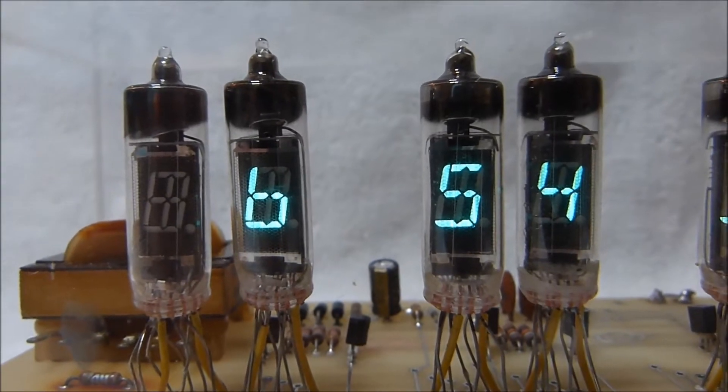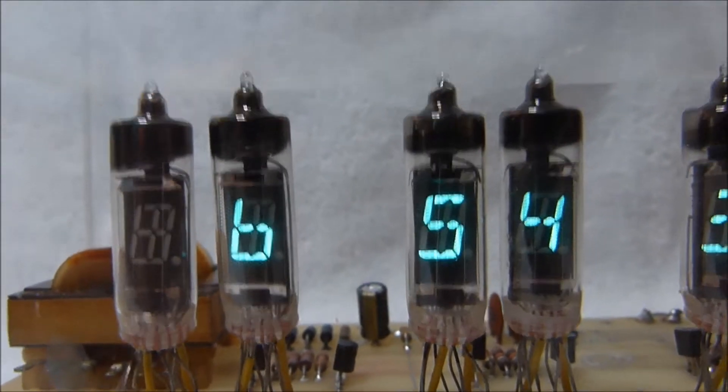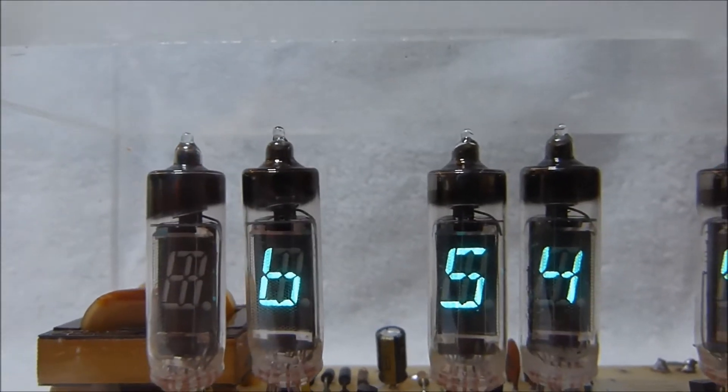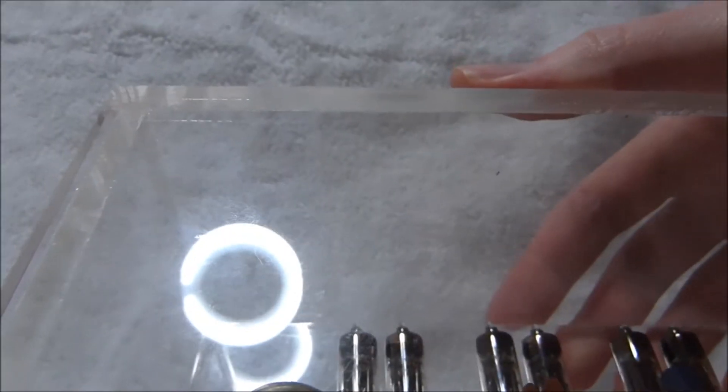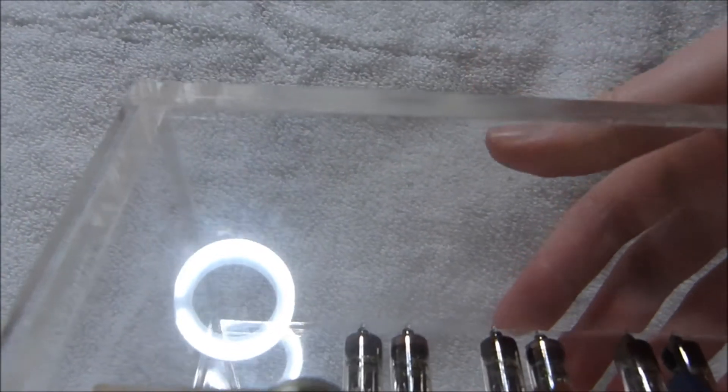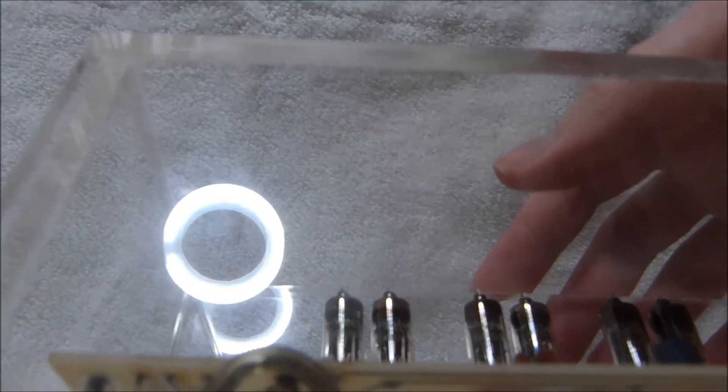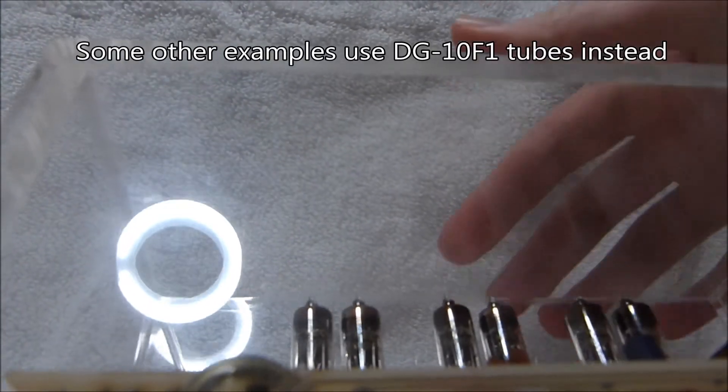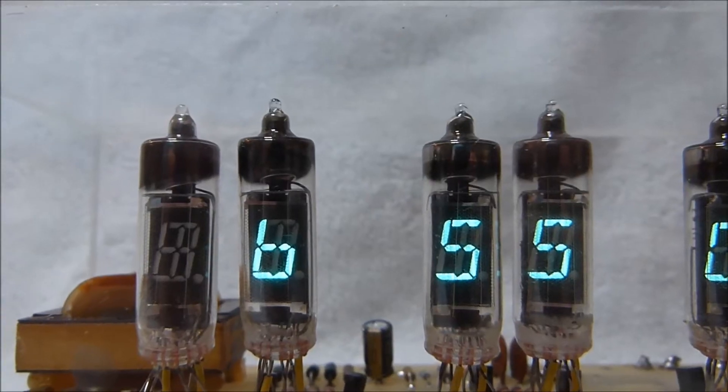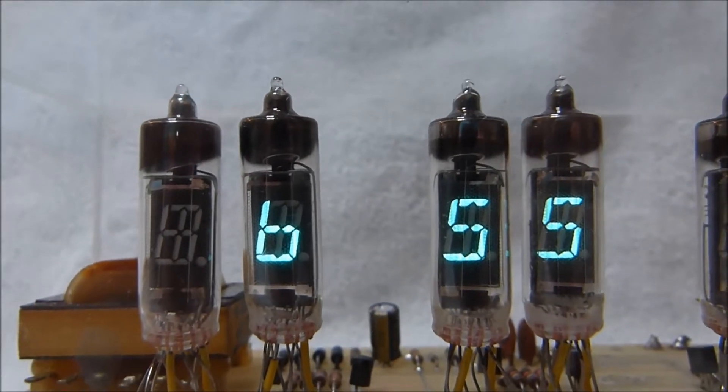You can see that the VFD tubes in this clock still glow quite brightly, unlike a lot of other early VFD clocks. These aren't the tubes you typically see in this particular model. They are NEC-DG-10ENs. You can see that these tubes have an extra pair of segments that is not used.